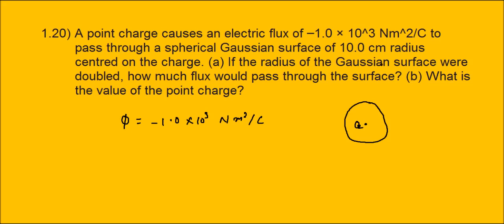If the radius of the Gaussian surface is doubled, how much flux would pass through the surface? As per Gauss's law, phi is equal to q-enclosed divided by epsilon-0, where q-enclosed means the total charge present inside the Gaussian surface divided by the absolute permittivity of the medium.